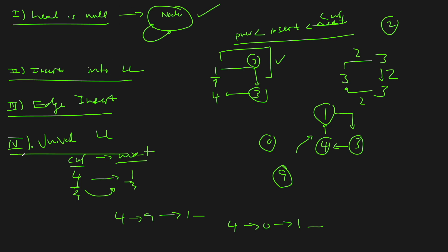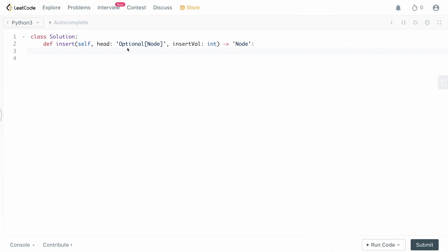Those are the four cases this question boils down to. Can you identify these four cases and handle them in your code? Otherwise it's actually really straightforward. We're going to go to the code editor now — it's only about 25 lines of code, not too complex.